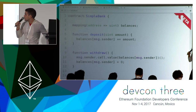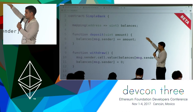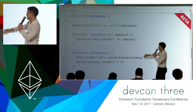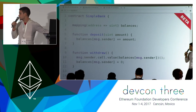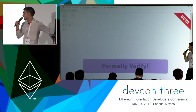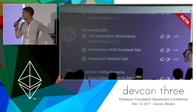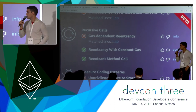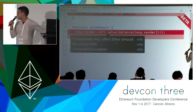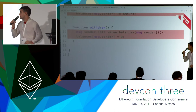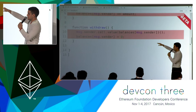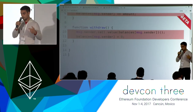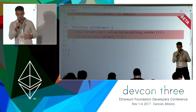Looking at this simple bank example, you have a storage variable 'balances' containing user balances, a deposit function allowing a user to deposit money, and a withdrawal function. If we click Formally Verify, we get a security report with various patterns checked. The one I'm interested in is gas-dependent reentrancy — basically the DAO bug. Clicking on the match line shows that Ether is sent and a storage value is set to another value after the call, meaning an attacker through their fallback function can call this function again within the same state.